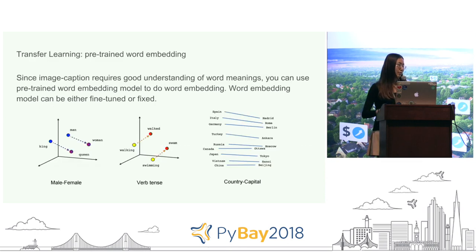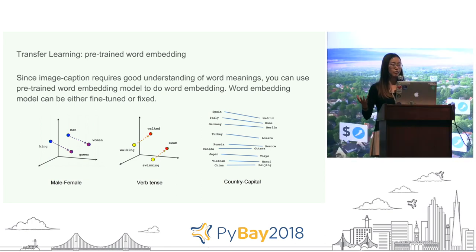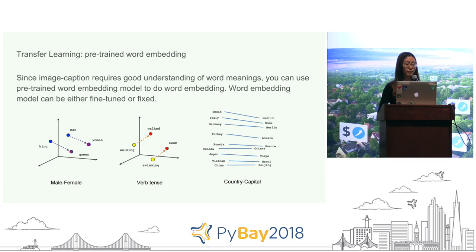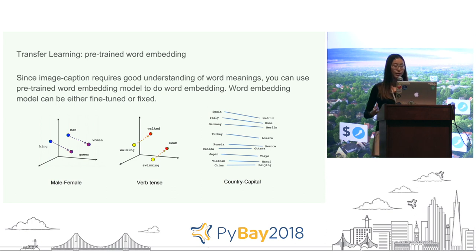Besides encoding each vocabulary word with a naive number from 1 to 5,000, we can use pre-trained word embeddings to encode each vocabulary so that we also capture the relationship between words. In word embedding, we project each vocabulary into a high-dimensional space which incorporates the relationship between each vocabulary.